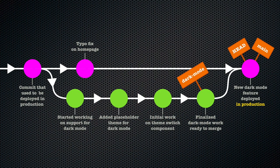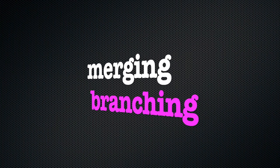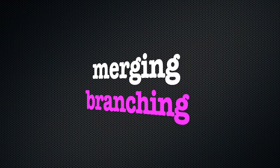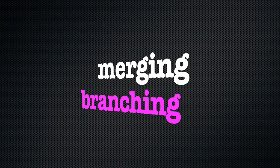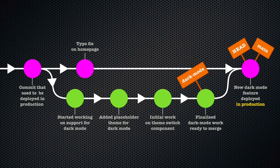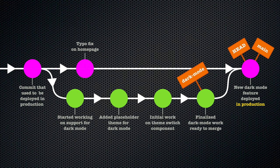In Git, we call this merging, and it is the exact opposite of branching. When we branch, a river splits in two. When we merge, we rejoin two branches of our river, so that they become together again.